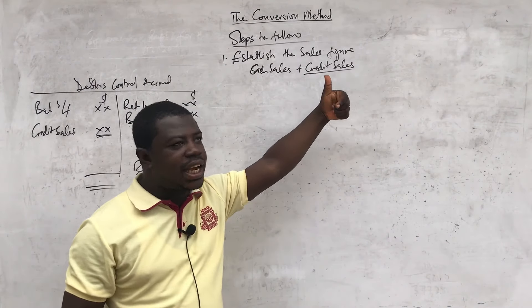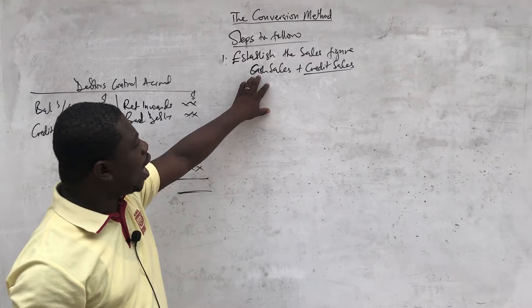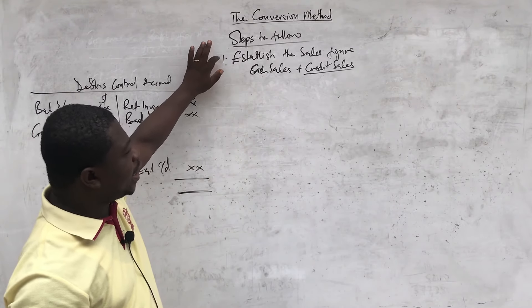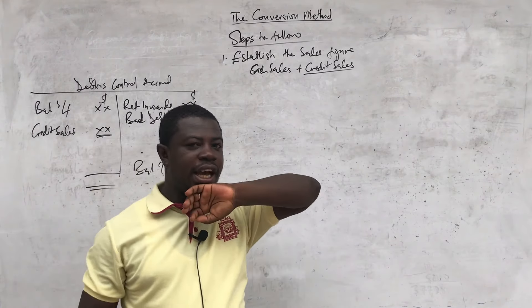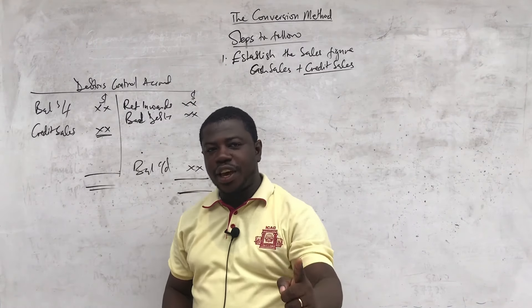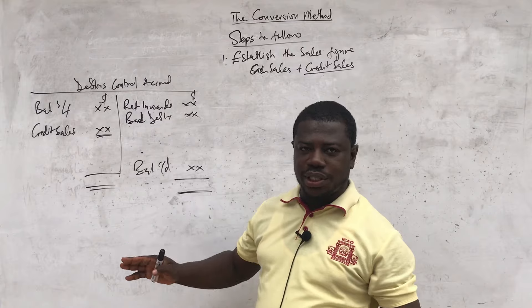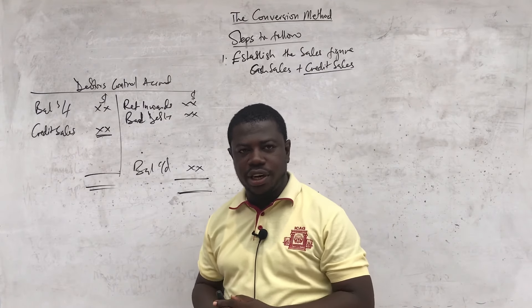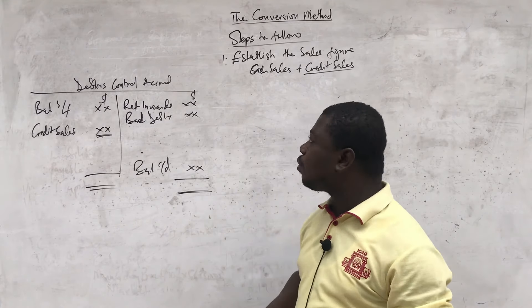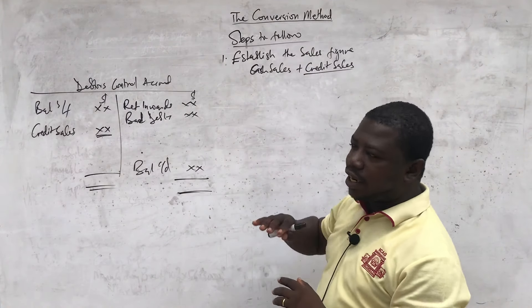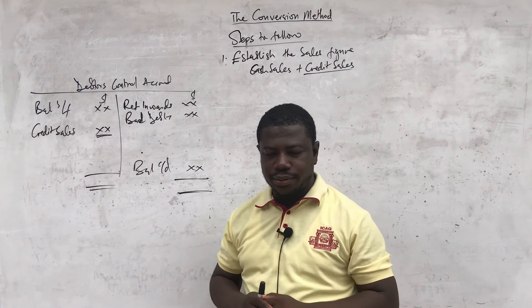If there is any cash sales, you add it to the credit sales to get the total sales figure. That should be the first step to solving any question on single entry or incomplete records under the conversion method.